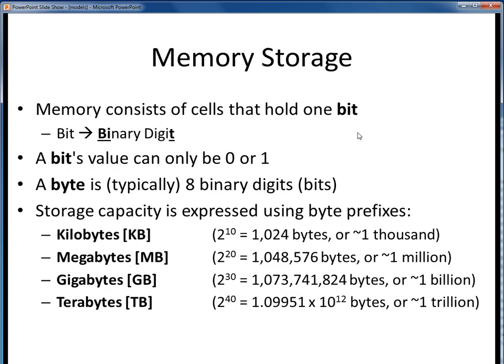As a refresher, memory storage is in terms of bits, or binary digits. A bit can only be a one or a zero, and bits are typically grouped by eights into bytes — so one byte is typically eight bits. Storage capacity in computers is aggregated into immense byte quantities using the various byte prefixes: bytes, kilobytes, megabytes, gigabytes, and so forth. Each of those quantities is a successively larger power of two, shown here as both exact and approximate quantities.